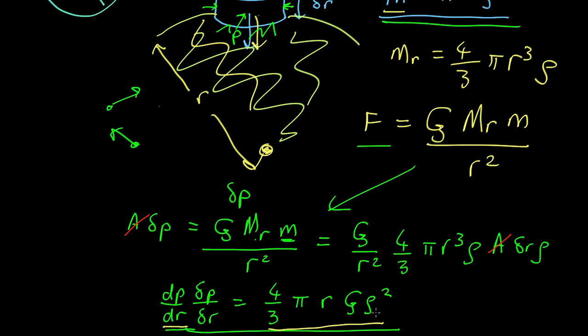In the current video we're going to now use this to work out what the central pressure in a white dwarf is compared to the central pressure in the Sun.